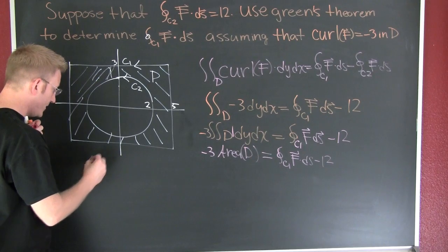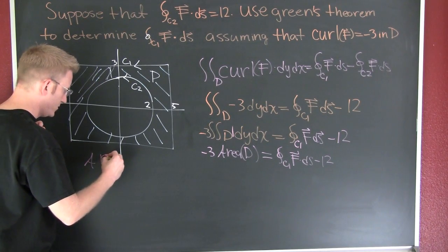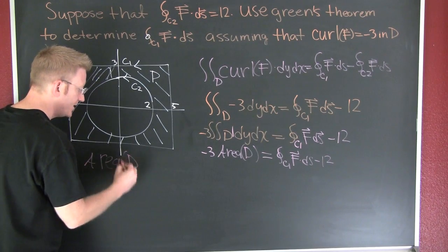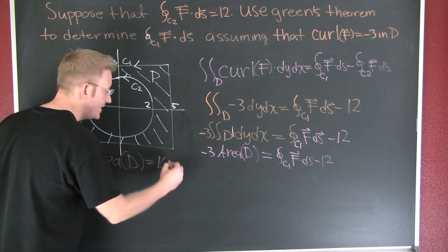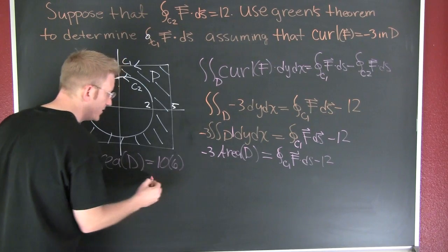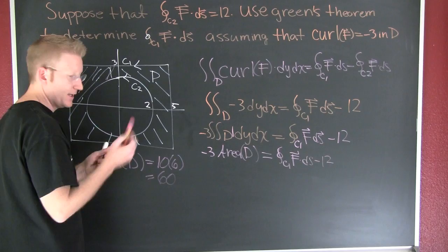So the area of region D is going to be 10 times 6 or 60. I think this one's trash.